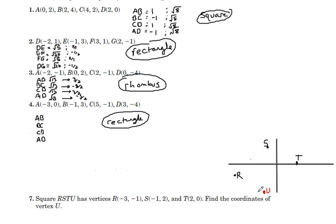And they will have the same midpoint of the diagonals. If we can connect S, U, and R, T, the midpoints will be the same. Let's first find the midpoint of RT. RT, the average of those two coordinates are negative 1 half and negative 1 half.